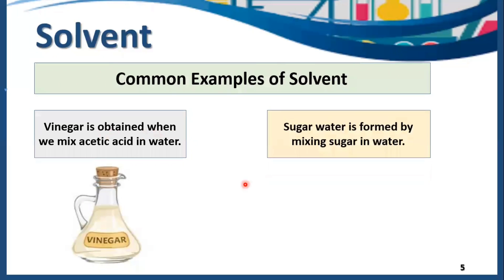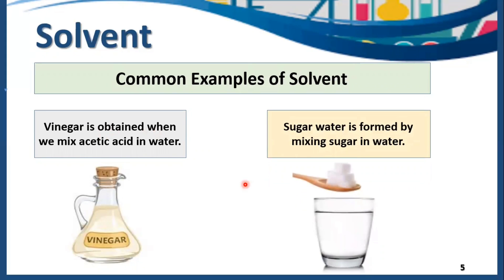Sugar water is formed by mixing sugar in water. Now what is water here? Water is the solvent here because it is present in the larger quantity, and moreover it is dissolving the sugar in itself.